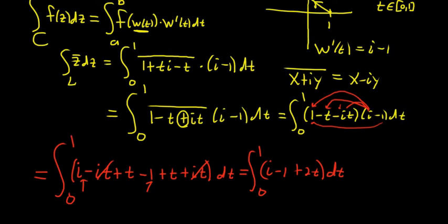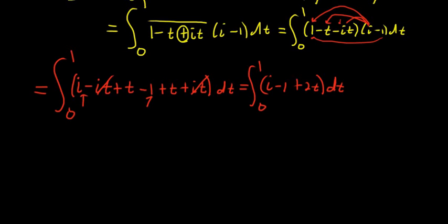Let's go ahead and integrate this. So when we do that, we integrate the i and the 1, so we just get it minus t. And integrating 2t, we get plus 2t squared over 2. So these cancel, and we're going from 0 to 1.